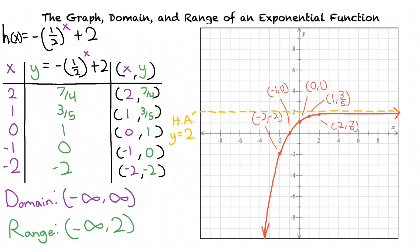To find our graph, we first find the graph of the exponential function before implementing the transformations. From there, we transform the graph to find our new graph. We then look at the x and y values present on the graph, and based on these values we write the domain and range for our exponential function.